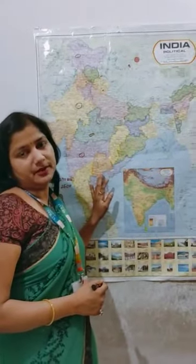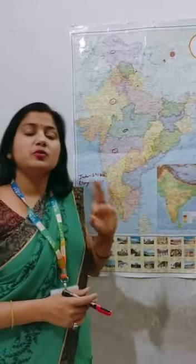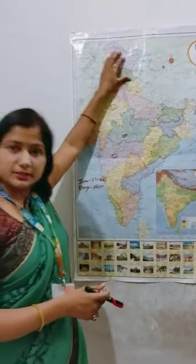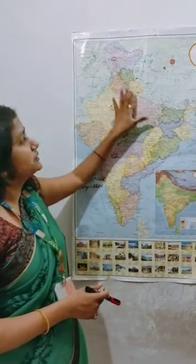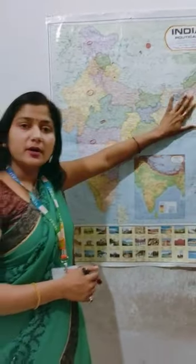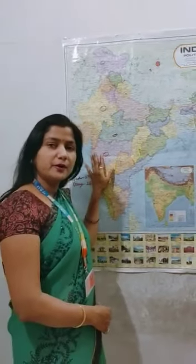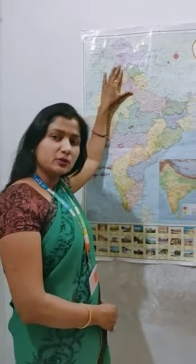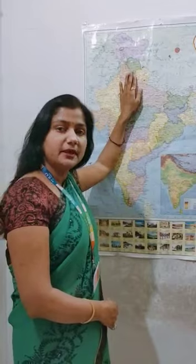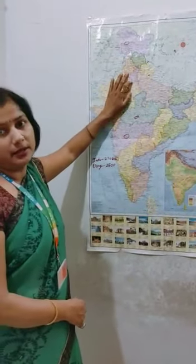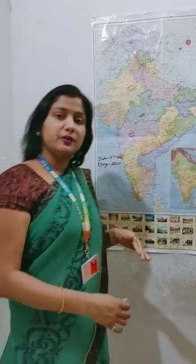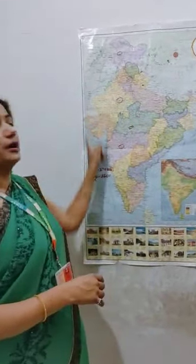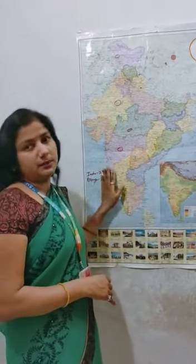The northern plains are divided into three main parts: number one is the Satluj basin, number two is the Ganga basin, and number three is the Brahmaputra basin. The western part of the northern plain is the Satluj basin. The river Satluj and its tributary river Beas drain through Punjab and Haryana, then enter Pakistan and join the Indus river. The river Satluj ultimately drains into the Arabian Sea.